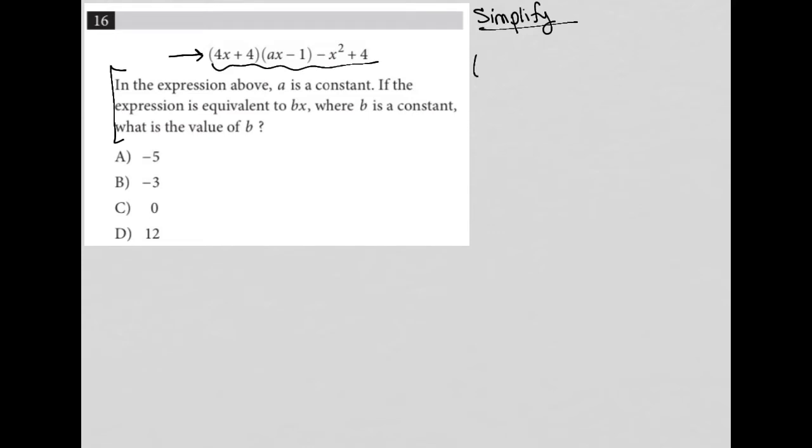I'm going to rewrite it here. I have 4x plus 4, I have ax minus 1, and minus x squared plus 4. So out of habit, whenever I recognize that a question is a simplification question, I just jump straight to simplifying what I have before I even read anything. So that's why I haven't read the actual question yet.